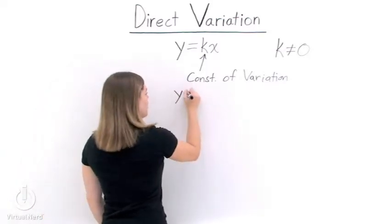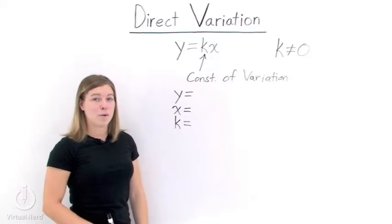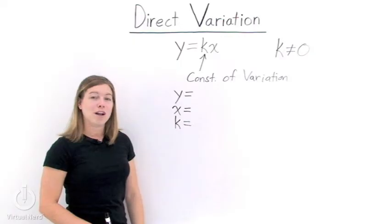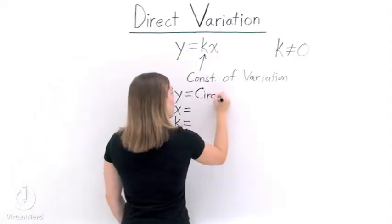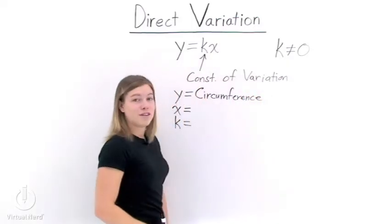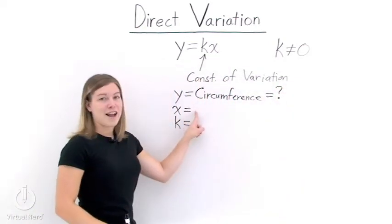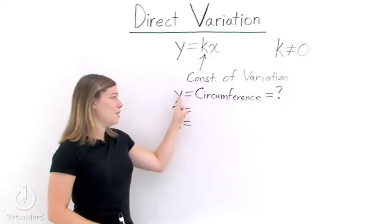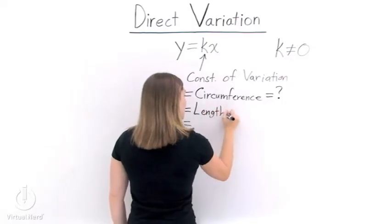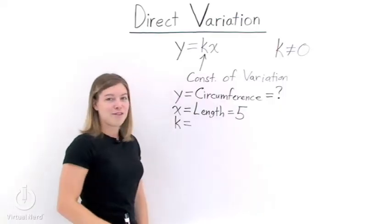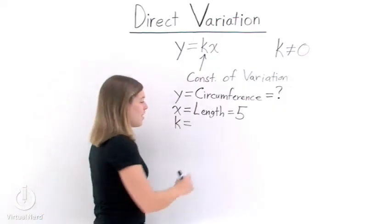We need to find all the different pieces: y, x, and k. Let's look at y first. Our problem says that the circumference of a square is directly proportional to the length of one of its sides. Since the circumference is directly proportional to the length of a side, y must be the circumference. We don't know what the circumference is — that's what we're trying to find, so y is our unknown variable. x must be the length of a side, and we're given that the length of one of the sides is equal to 5, so we have x. k is our constant of variation, and our problem says that the constant of variation is 4.